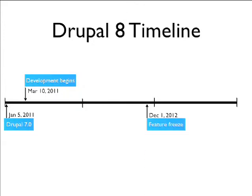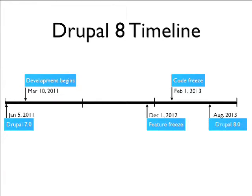Feature Freeze is December 1st. What happens at Feature Freeze is between development and Feature Freeze we sort of try to cram as much stuff into Drupal as possible — whatever really ticks people off, whatever cool thing they always wanted Drupal to do. When Feature Freeze happens, we cut off the flow of features and instead focus on bug fixes and stabilization. That date is now April 1st for Code Freeze, and then finally a release — now September of 2013 — of Drupal 8.0.